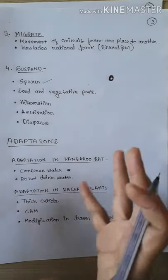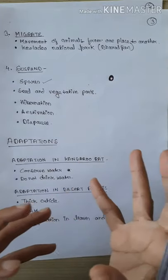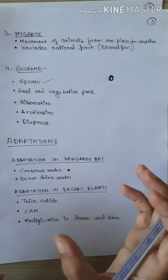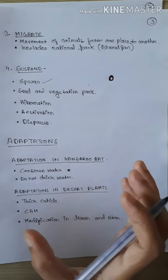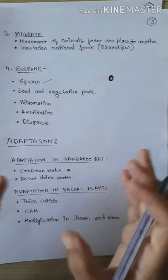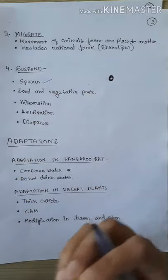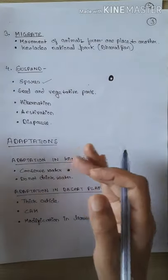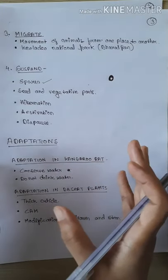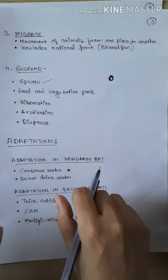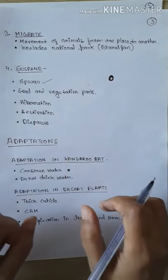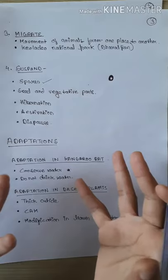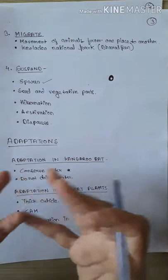Seeds bhi ek suspend type form hain — jaise wheat ke seeds hum collect karte hain, store karte hain, aur jab sow karte hain tab germinate hote hain. Vegetative parts bhi hote hain jaise sweet potato — jo ek modified root hai. Jab favorable condition hoti hai to sweet potato easily grow karta hai, branches aur leaves aate hain. Jab unfavorable season shuru hota hai to sweet potato underground reh jaata hai. Jaise hi favorable condition aati hai, woh phir grow karta hai.